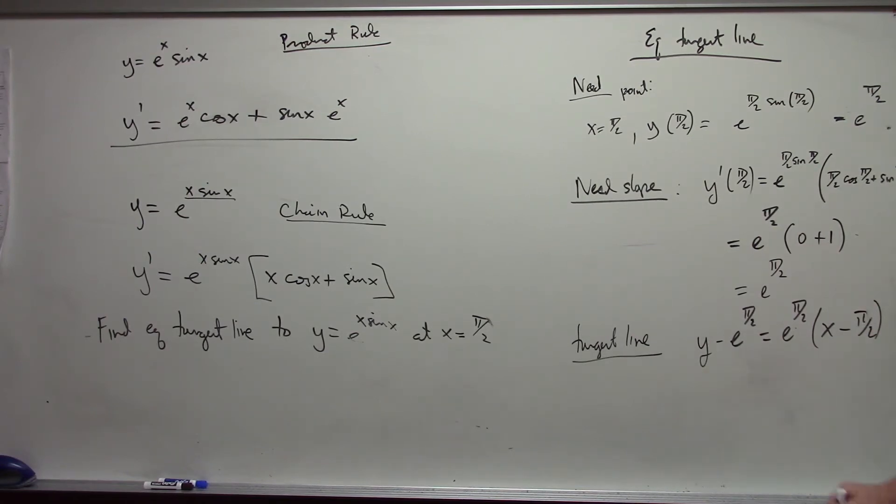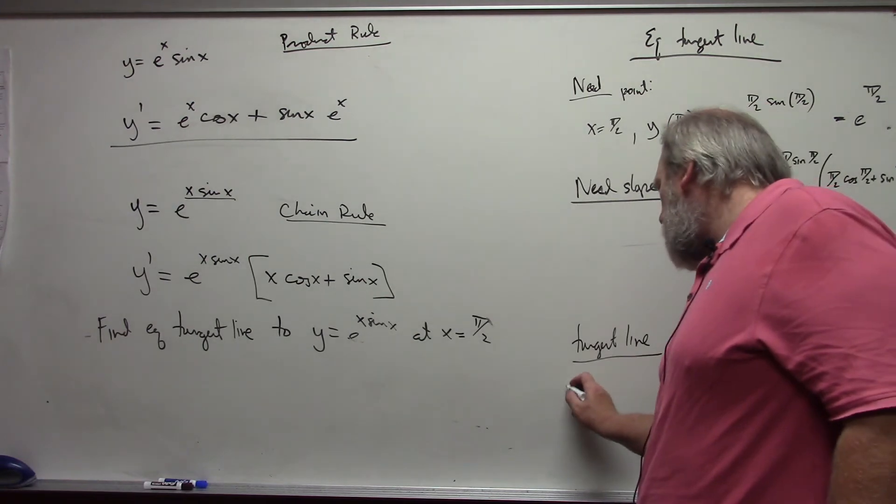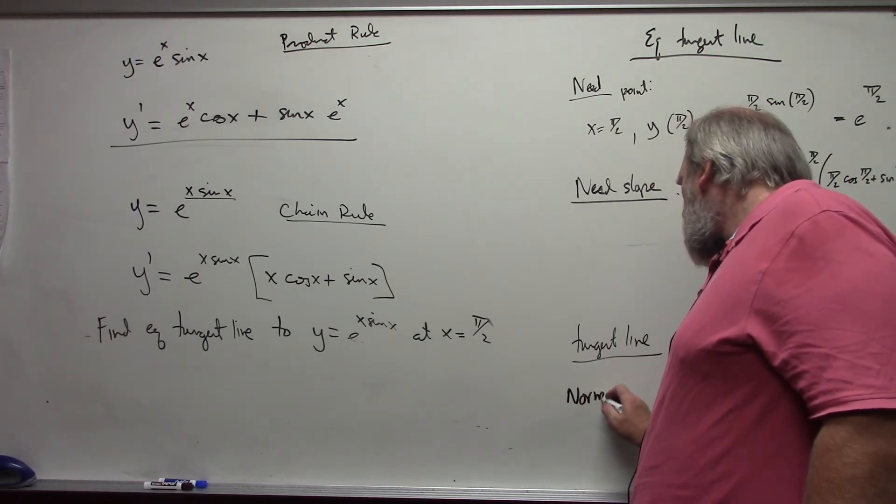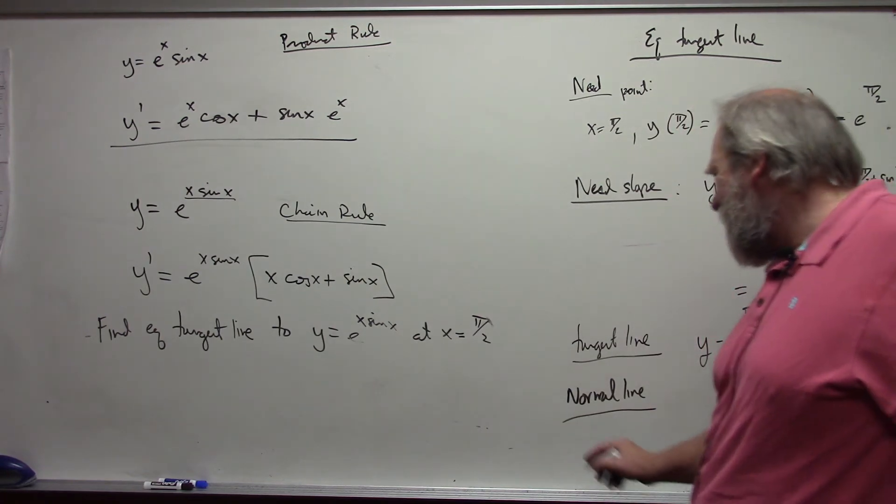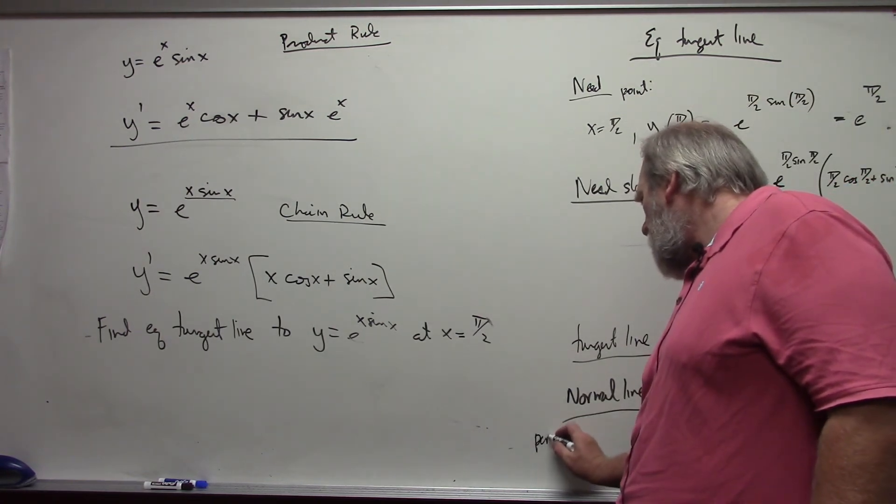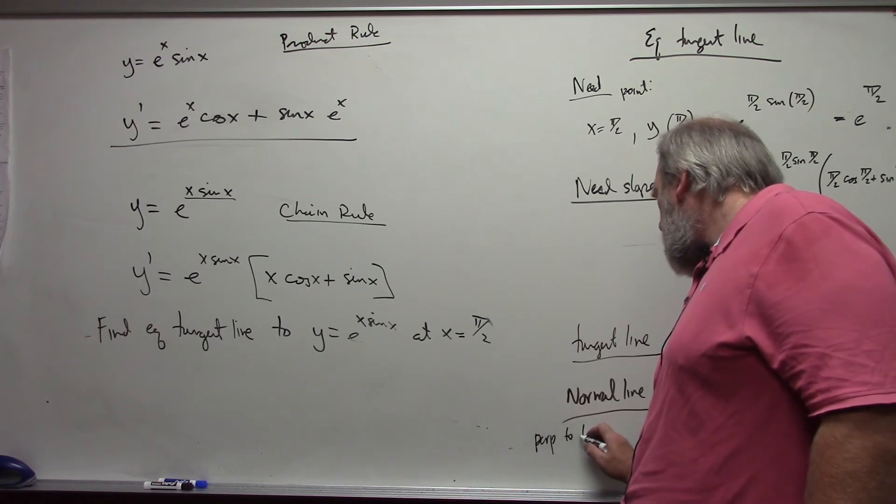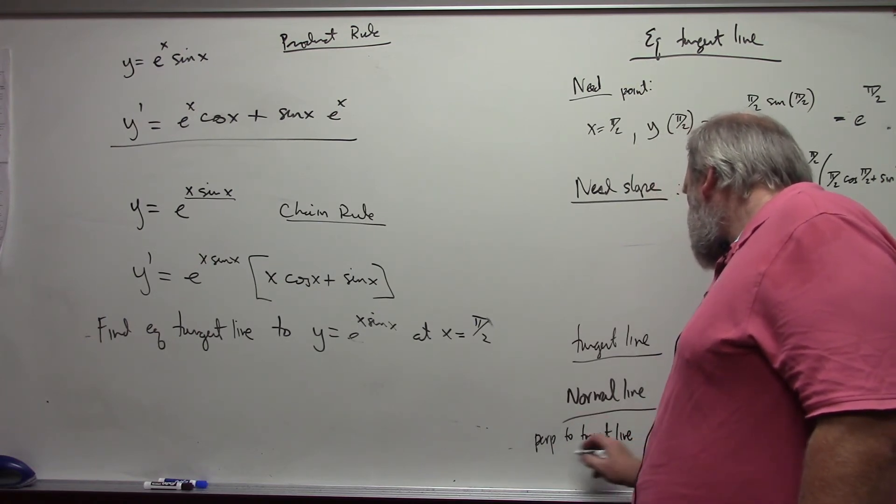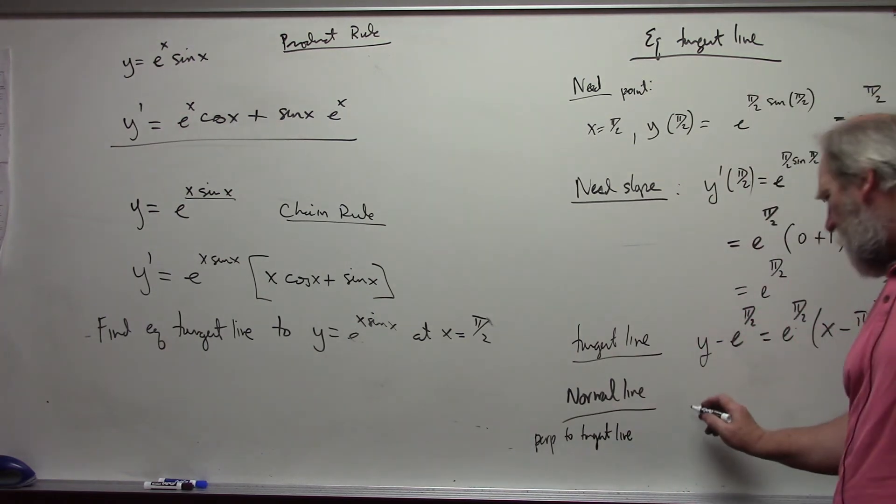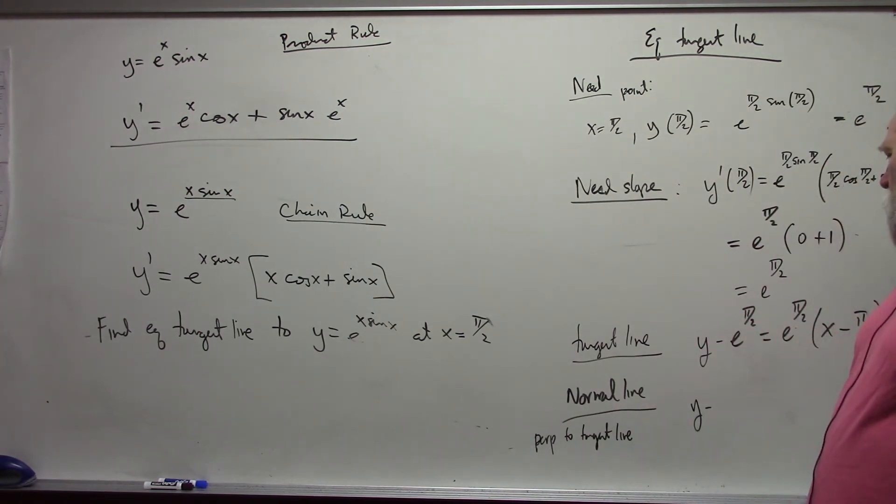We can also find the equation of the normal line through the point. The normal line is perpendicular to the tangent line. And so the normal line would be y minus e to the pi over 2. The point that we deal with does not change, the only thing that changes is the slope.